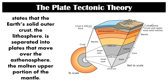The plate tectonic theory says that the Earth's solid outer crust — the lithosphere itself — is separated into plates that move over the asthenosphere, the molten upper portion of the mantle. What we are pointing out here is that the plates are in the lithosphere, which sits over the moving asthenosphere of our planet. Take note of those two layers.